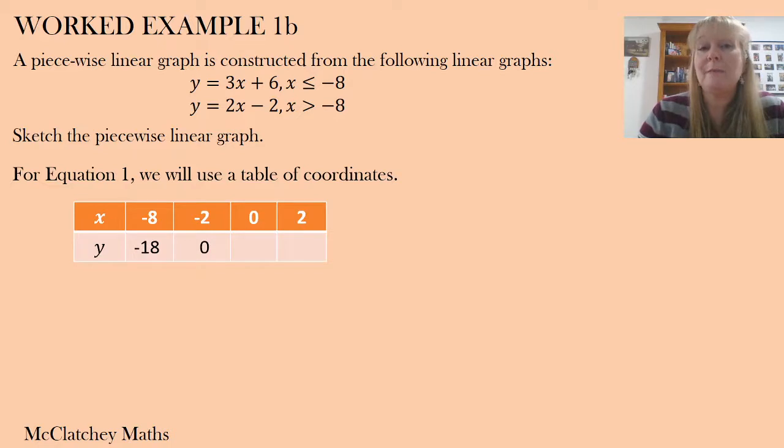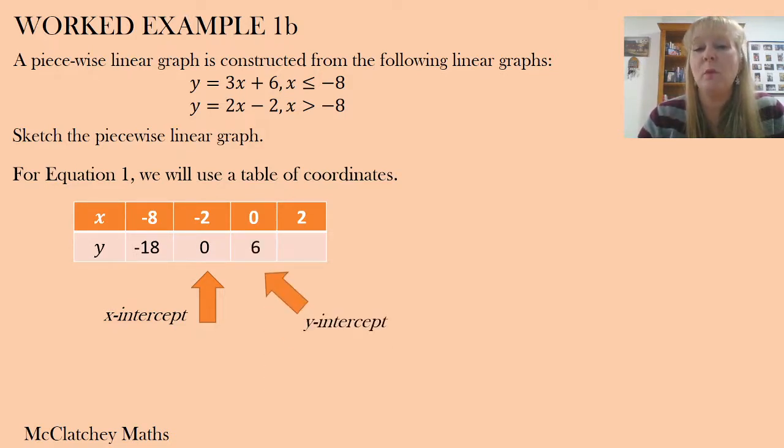As it turns out, when I substitute negative 2 into that first equation, so just work with me, 3 times negative 2 is negative 6 plus 6 more gives me 0. What I've effectively found here is my x-intercept. So that's going to be really nice as well for me to graph that. It was just coincidence that that turned out that way. When I substitute 0 in, I find 6 and that of course is the y-intercept. And then the next value is 2. 2 times 3 is 6 plus 6 more gives me 12. So now I've got four points.